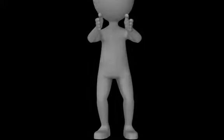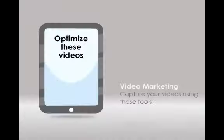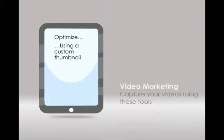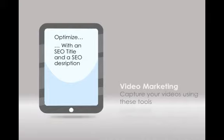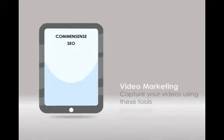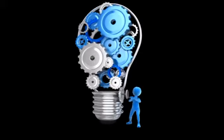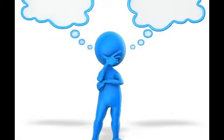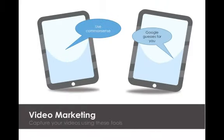Once you've got those videos, you want to optimize them with the features we shared earlier — things like a custom thumbnail, an SEO title, and an SEO description. Before I even shoot one video, I'll come up with 20 titles in advance and make them SEO friendly. Rather than going into a big lesson on SEO, here's common sense SEO: think about what you would be searching for in YouTube or Google to find that topic, and use that. What would you be searching for? Use common sense.